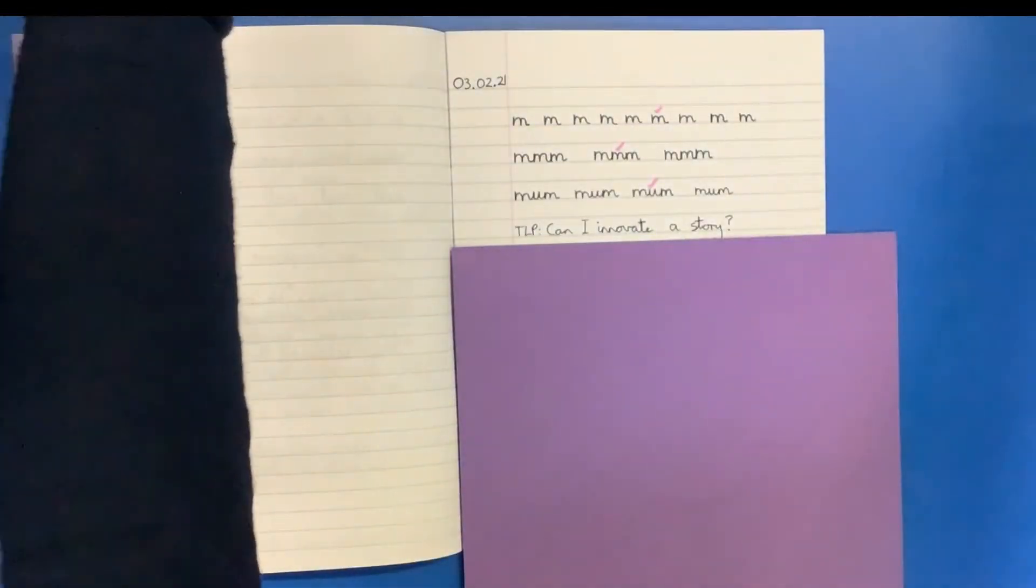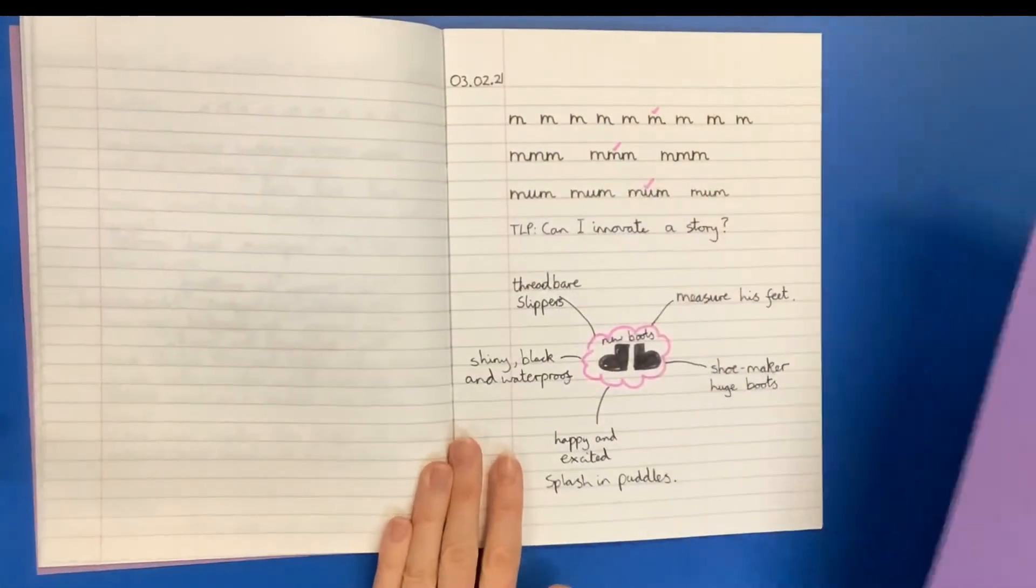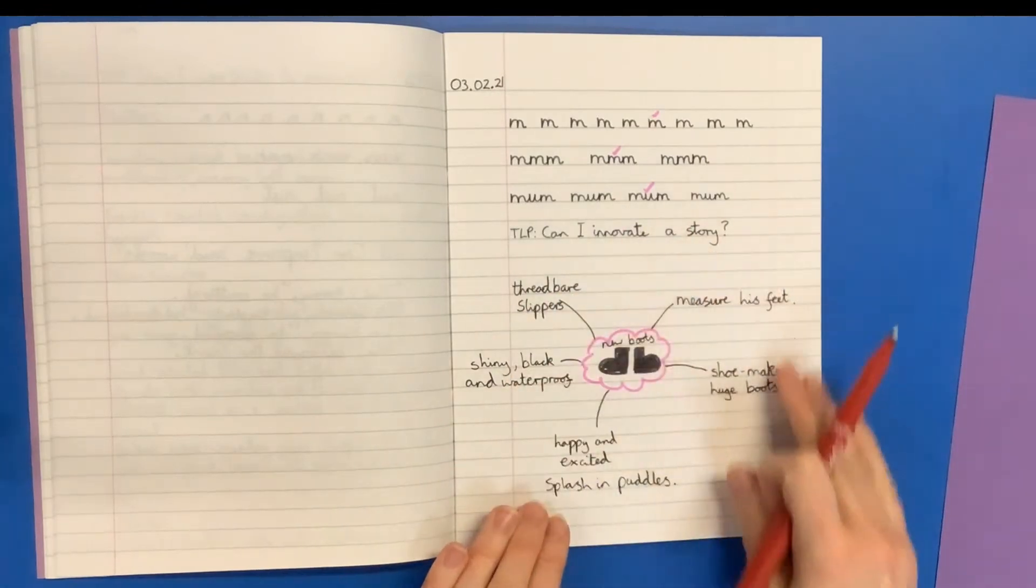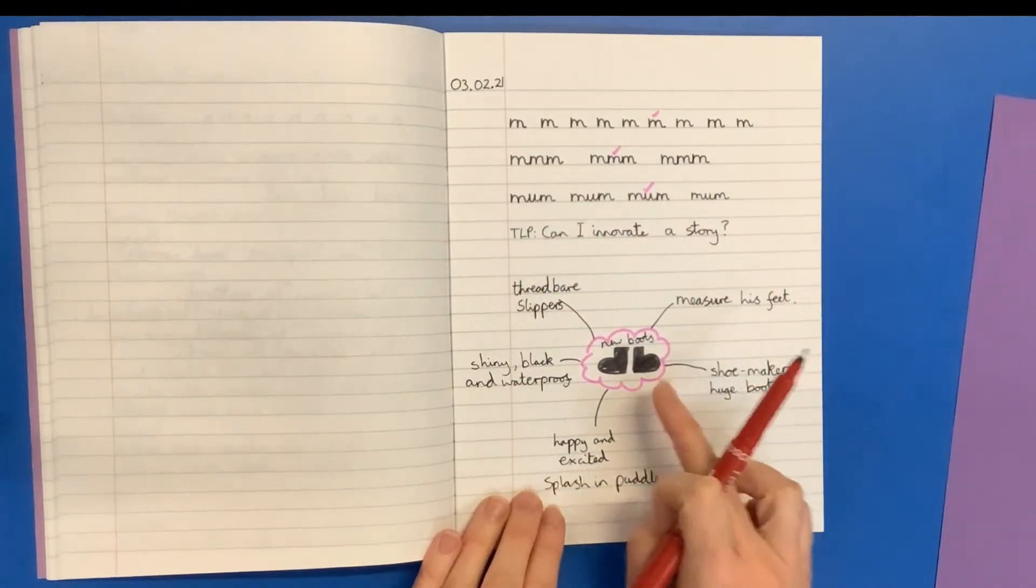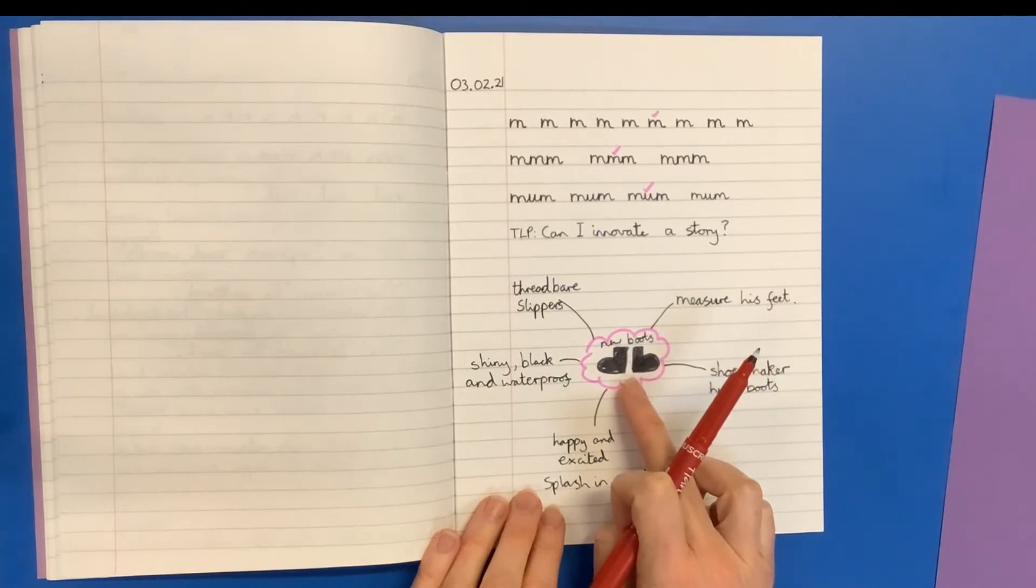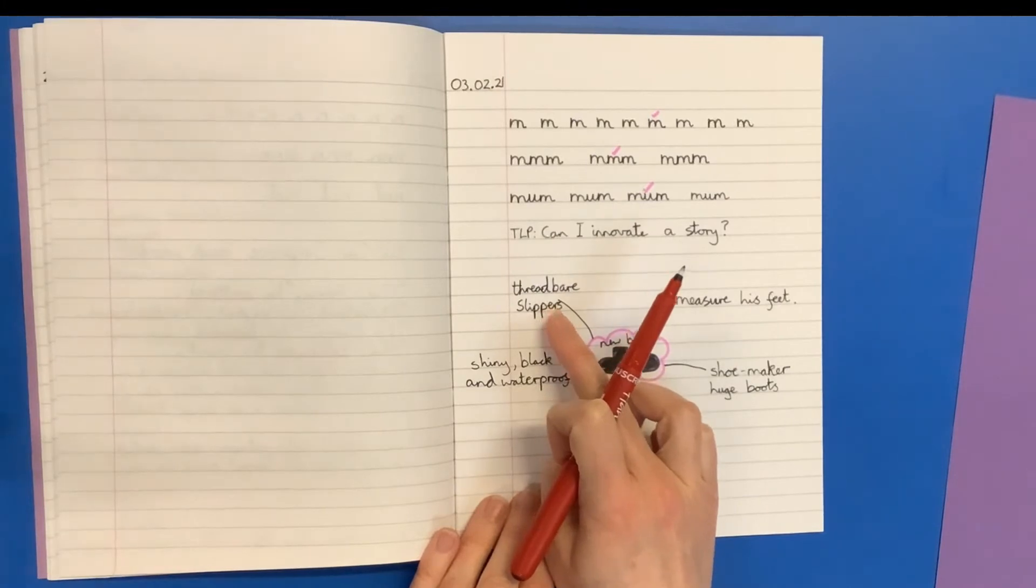So what I've done is I've created a little mind map of my ideas about the new boots. So he's got his new boots. The reason he wanted them was because at the minute he's got threadbare slippers.